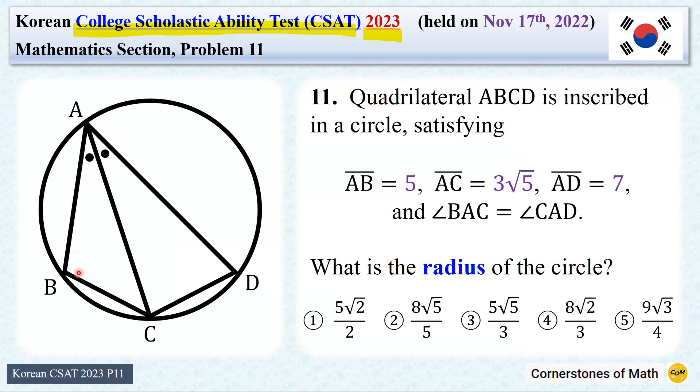Quadrilateral ABCD is inscribed in a circle, satisfying length of AB equals 5, length of AC equals 3 square root of 5, length of AD equals 7, and angle BAC equals angle CAD. So this equals this, then what is the radius of the circle? And this is actually a multiple choice problem, so if you want to find the answer by yourself, please pause right here.